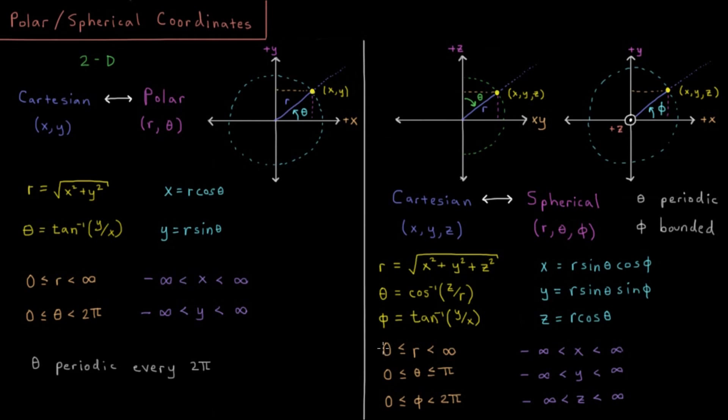So once again, r is bounded on one side, goes from zero to infinity, distance from the origin once again. Phi can be anywhere in this x, y plane in terms of angles. It's going to repeat itself and be periodic every 2π, 360 degrees. And phi is going to be from zero to 180 degrees. And when you come out the other side, you're still at 180 degrees.